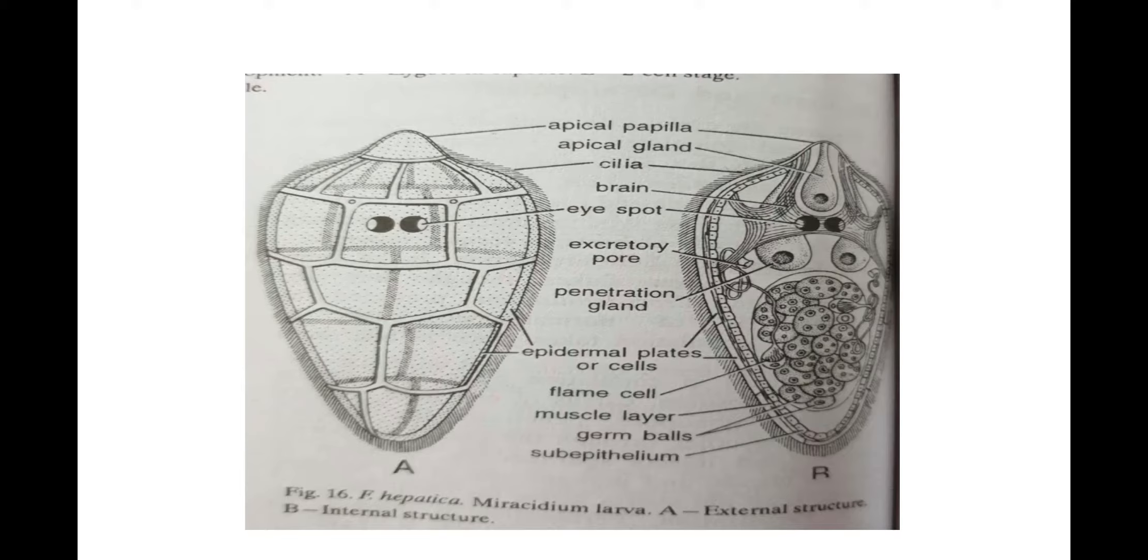Within the body of Miracidium are present glands, nervous tissue, protonephridia and germ cells. A sac-like multinucleate mass of granular protoplasm is attached to the center of apical papilla by a stalk. This structure, earlier thought to be rudimentary gut, is now regarded as apical gland. A pair of large unicellular cephalic or penetration glands open by their narrow end near the apical papilla.